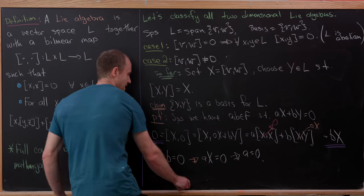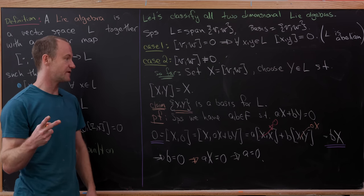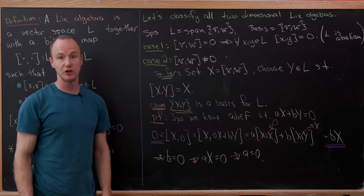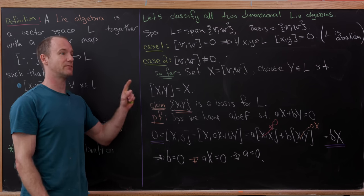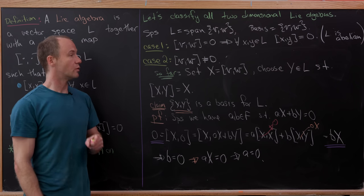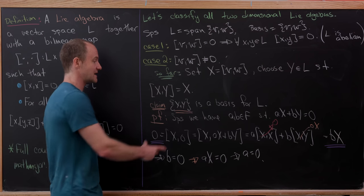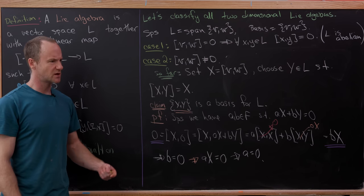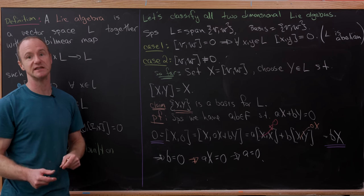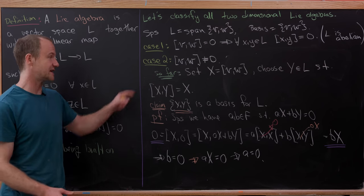Since we have two linearly independent vectors in a two-dimensional Lie algebra, they must form a basis — linear independence implies spanning because we have the correct number. So a two-dimensional Lie algebra is either Abelian, or we can find a basis {X, Y} where the bracket of X with Y equals X. This classifies two-dimensional Lie algebras into exactly two classes: a single Abelian case and a single non-Abelian case.